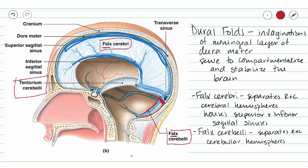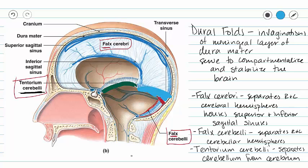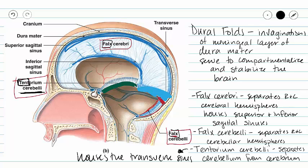Lastly, we have our tentorium cerebelli. Our tentorium cerebelli makes a tent over the cerebellum and separates the cerebellum from the cerebrum. It houses our transverse sinus, which is called the transverse sinus because it moves in a transverse plane through the head. To summarize: our falx separate hemispheres, and our tentorium cerebelli makes a tent over the cerebellum.